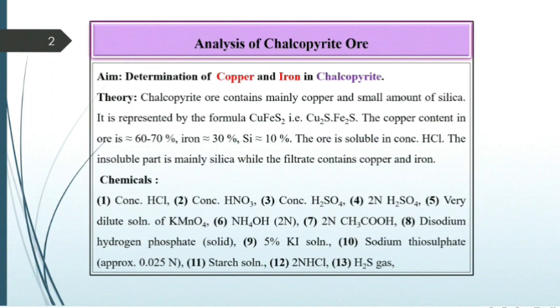The aim of the experiment is determination of copper and iron in chalcopyrite. Theory: Chalcopyrite ore contains mainly copper and a small amount of silica. It is represented by the formula CuFeS2, that is Cu2S·Fe2S. The copper content in the ore is approximately 60–70%, iron 30%, silica 10%. The ore is soluble in concentrated HCl. The insoluble part is mainly silica while the filtrate contains copper and iron.